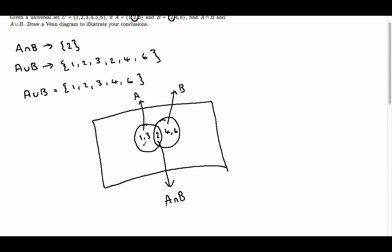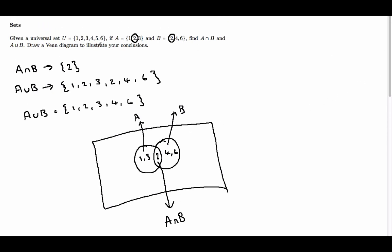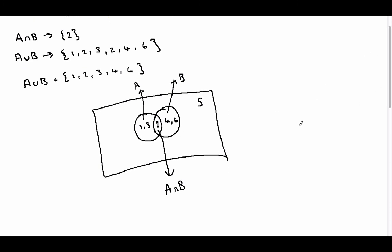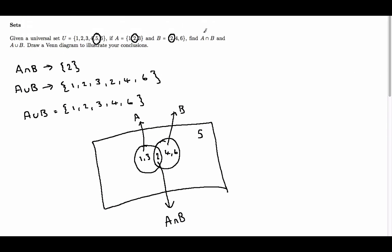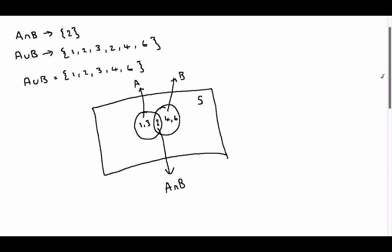So in A and B we have 1, 2, 3, 4 and 6, but in our universal set we had 1, 2, 3, 4, 5 and 6. Now 5 doesn't appear in A or B, so we'll have 5 outside of those circles. So we have found the intersection and the union of A and B, and we have illustrated these results in our Venn diagram.